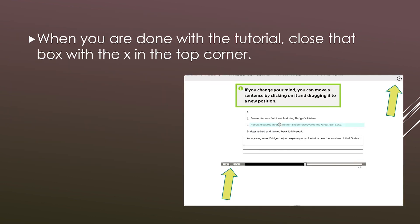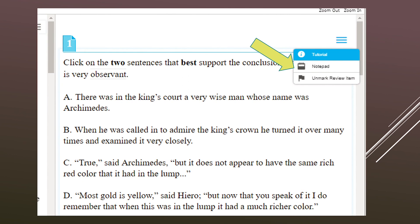In that same drop-down menu, you'll notice it says 'tutorial.' If you click on tutorial, a new window will pop up teaching you how to use the software. It will not teach you how to answer that specific question — however, it will teach you how to click, drag, or select something using this online software. When you no longer need the tutorial, choose the X in the top right corner and it will disappear.